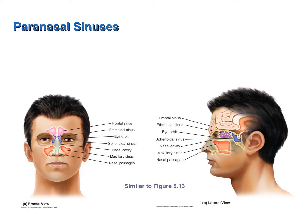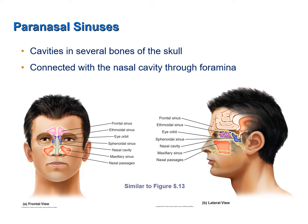The first topic I would like to discuss are the paranasal sinuses. Several bones of the skull contain cavities or air spaces. Para means besides, so these air spaces are located beside the nasal cavity. These spaces are connected to the nasal cavity through tiny holes called foramina. The paranasal sinuses are lined with mucosa or mucous membrane.